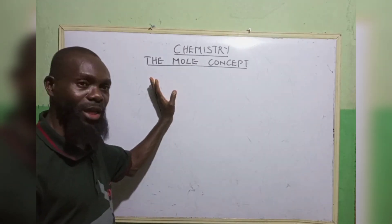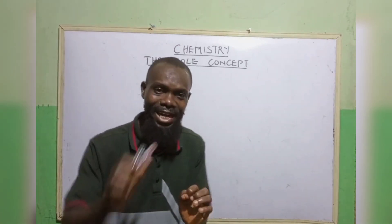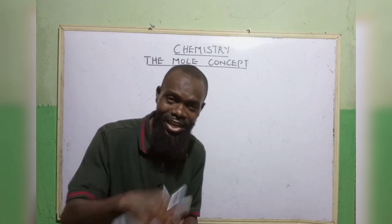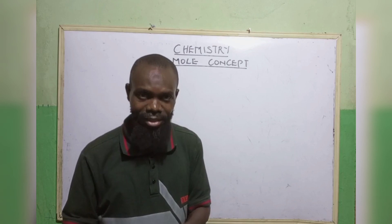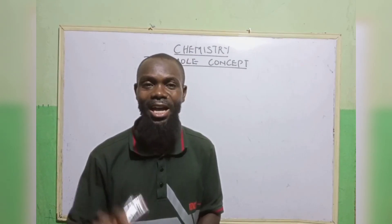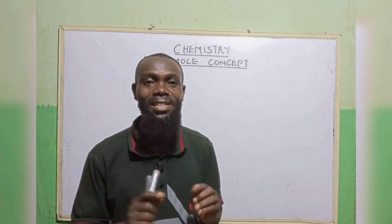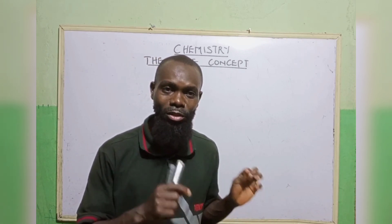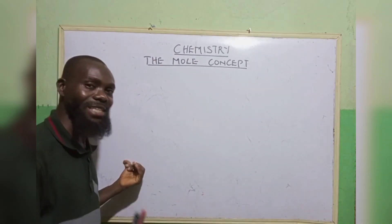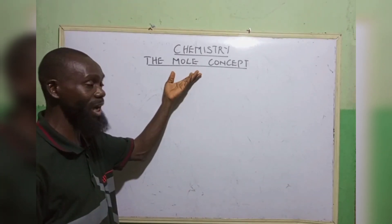The mole can be related or likened to a bag of rice that contains some grains. So the whole bag of rice is called the mole, while the grains are the elementary units. The mole of a substance can be defined as the amount of a chemical substance that contains as many elementary units as there are in carbon-12 atoms. So the amount of elementary units that can be found in one atom of carbon-12 is what we refer to as the mole.